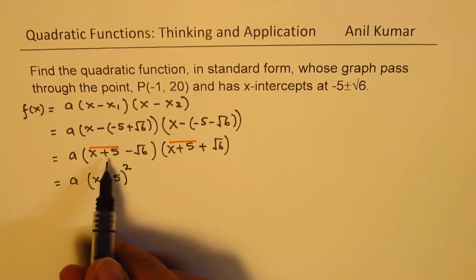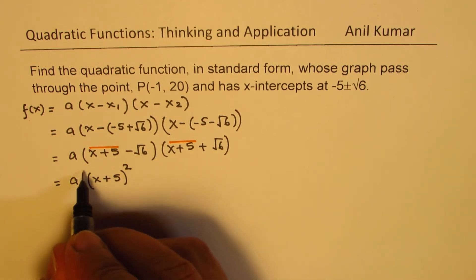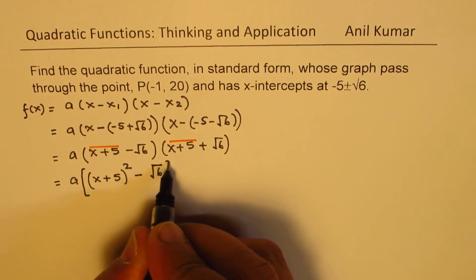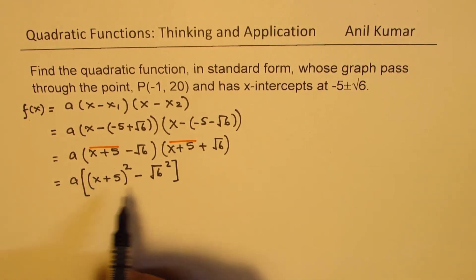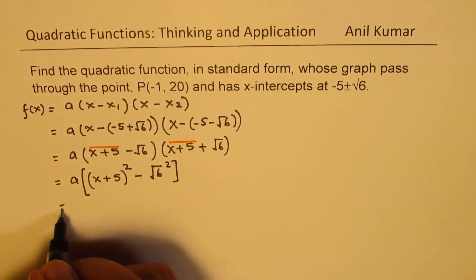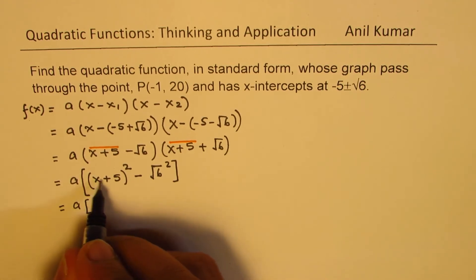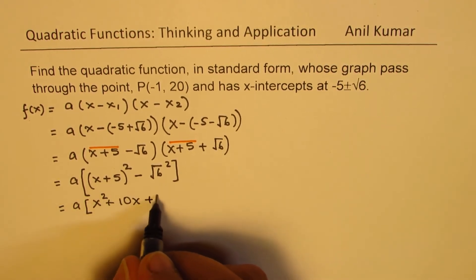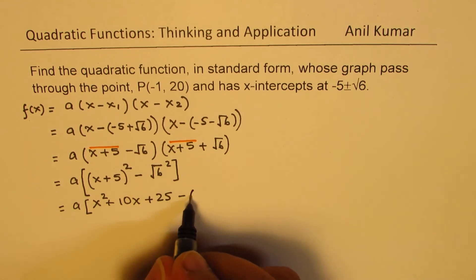So that becomes a² - b², which I could write as... let's expand this... x² + 2ab, which is 10x, plus b², which is 25, minus √6 square is 6.